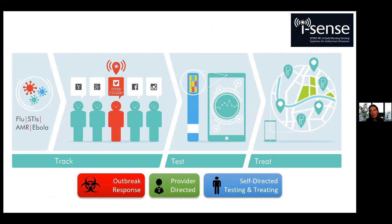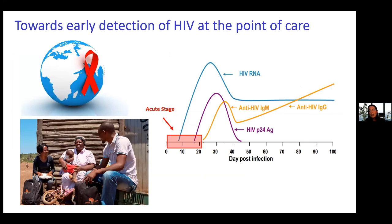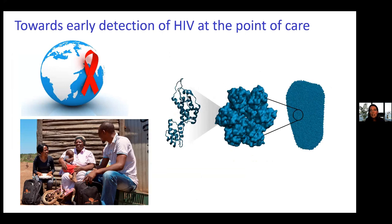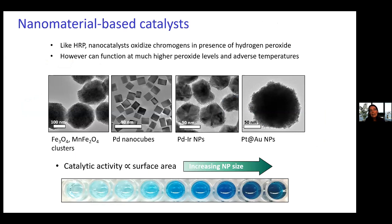We've set up a center called iSense, where I'm currently deputy director. It was set up several years ago pre-COVID, with people working on tracking of symptoms within a population, ultra-sensitive biosensing, and coupling to online care pathways. The example I'm going to give is about early HIV detection — we need it to be early point of care, which is very difficult. Previously, a good point of care test could only detect antibodies, which only appear after three weeks; to get to the acute stage you need to detect the virus itself.